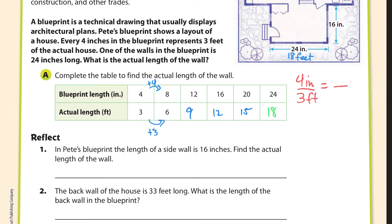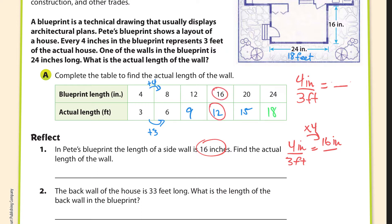In Pete's blueprint, the length of a side of the wall is 16 inches — find the actual length. We use the same ratio: 4 inches corresponds to 3 feet. They give me 16 inches, and 4 times 4 is 16, so 3 times 4 is 12. That means 16 inches equals 12 feet.